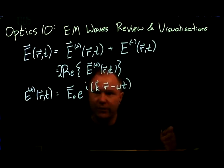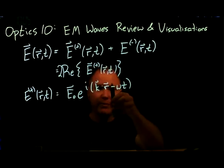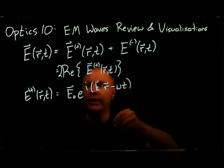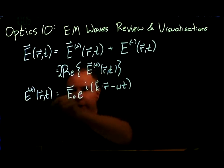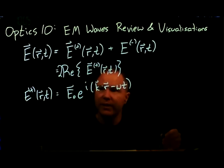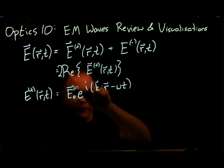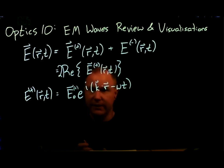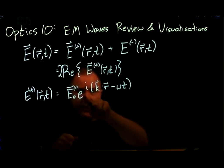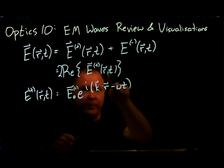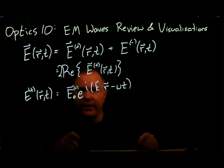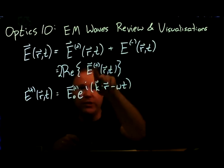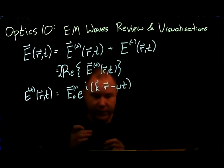Whether this is a sine wave or a cosine wave at t equals zero, or some other randomly shifted sinusoid, that's all encoded in the phase of this wave. The real part of this whole thing is the cosine of what's inside the complex exponential. If this number has a phase, that phase offset goes into calculating the real part of this cosine.